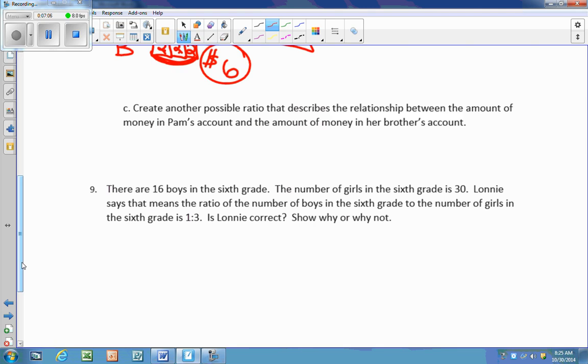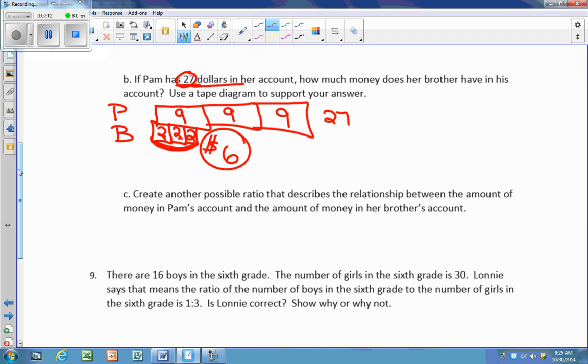Create another possible ratio that describes the relationship between the amount of money in Pam's account and the amount of money in her brother's account. So we know that the original ratio is $9 to $2. And we just found out above that another example would be $27 to $6. You can come up with any other ratio that you'd like that follows that pattern. And you can use your tape diagram to help you, or you can make equivalent ratios. So for example, if I have 9 over 2, I can multiply or divide by any factor to give me an equivalent ratio. So I'm going to multiply by 5 on the numerator and 5 on the denominator. And 5 is just a random number that I picked. And that's going to give me 45 to 10.